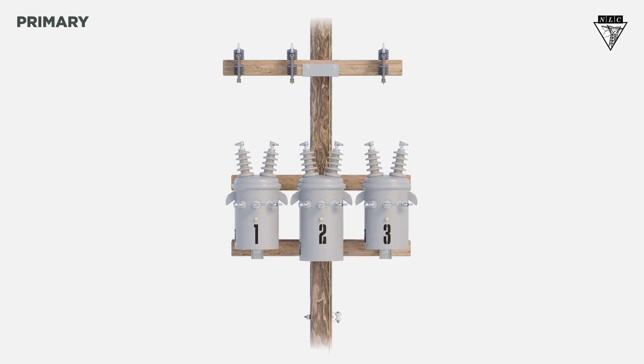Let's begin on the primary side. Start by connecting the H2 bushing of the first transformer to the H1 bushing of the second transformer. Connect the H2 of the second transformer to the H1 of the third transformer. Connect the H2 of the third transformer to the H1 of the first transformer.